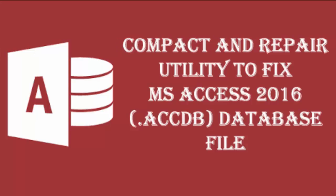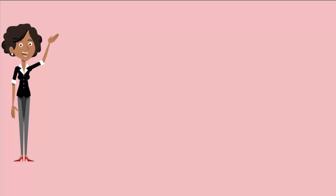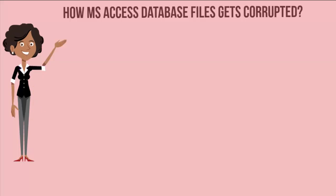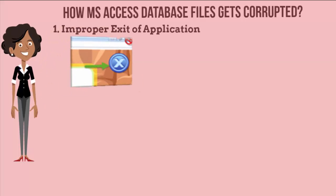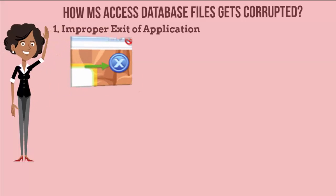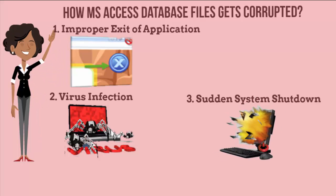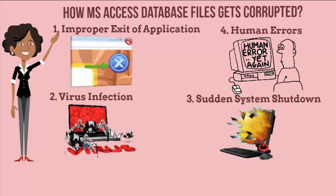In this video tutorial I am going to teach how to use the compact and repair utility to fix a corrupted MS Access 2016 database file. But before that, let us know how MS Access database gets corrupt. The corruption can take place due to improper exit of application, virus infection, sudden system shutdown, human errors, etc.